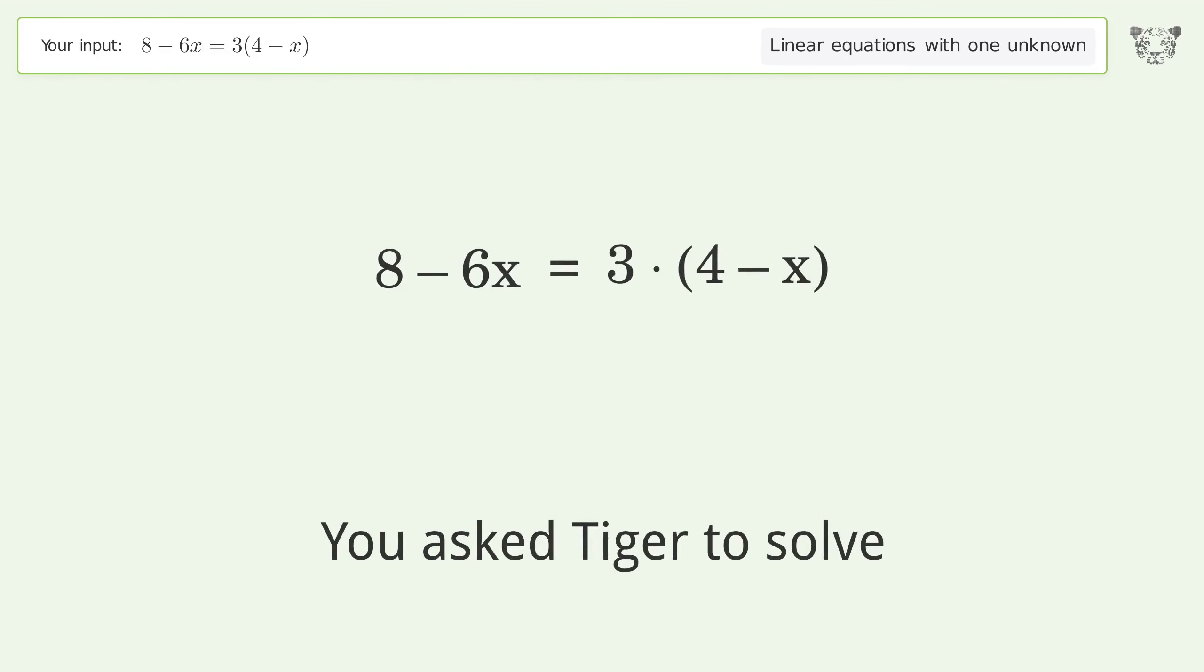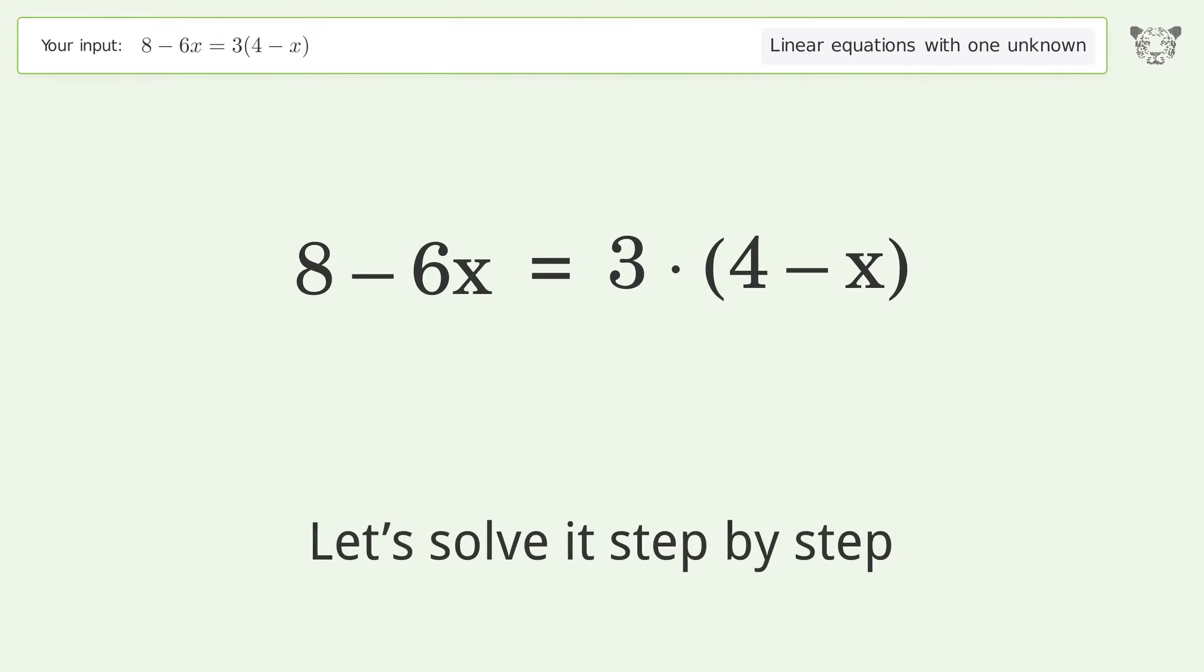You asked Tiger to solve this. It deals with linear equations with one unknown. The final result is x equals negative 4 over 3. Let's solve it step by step.